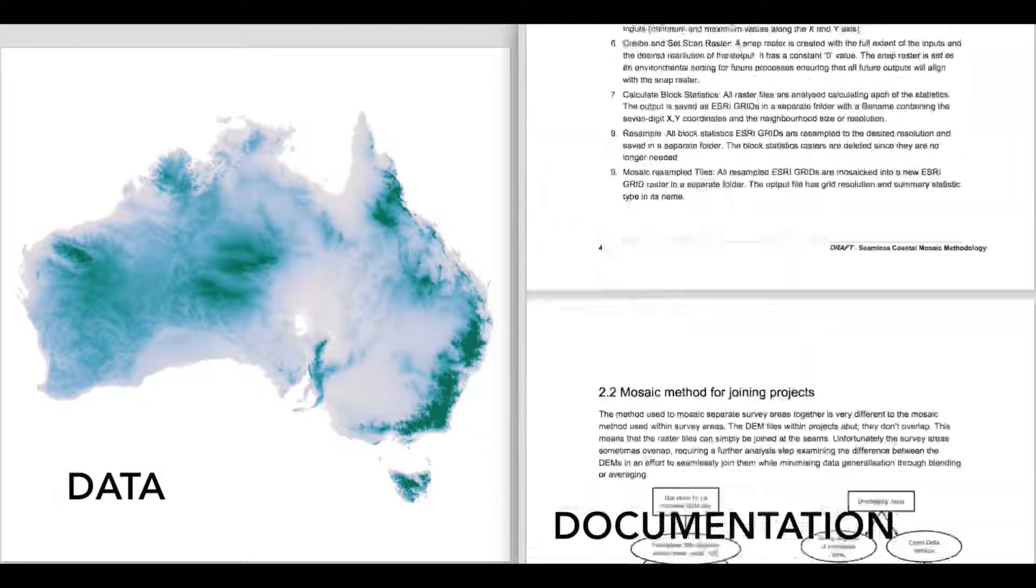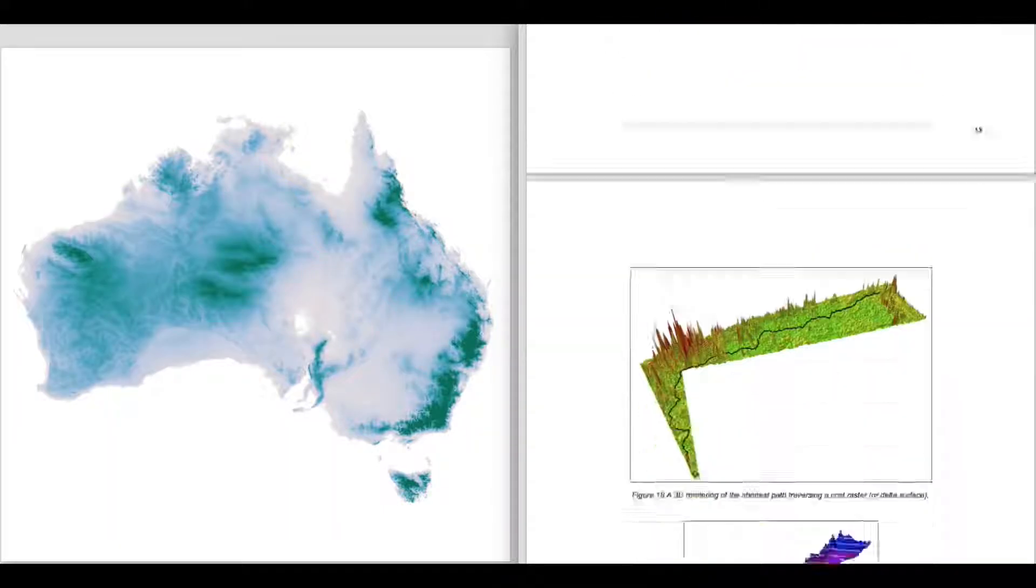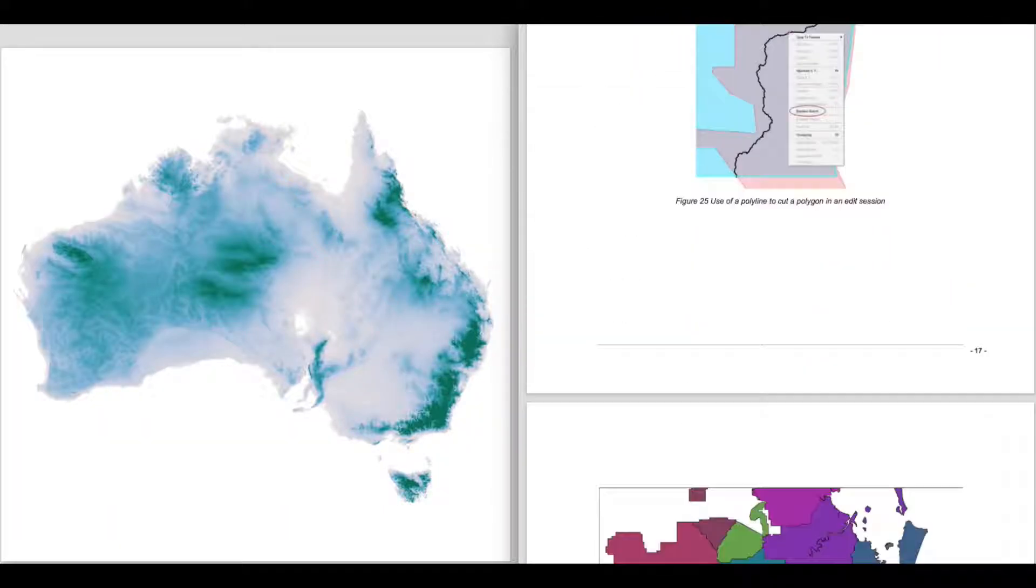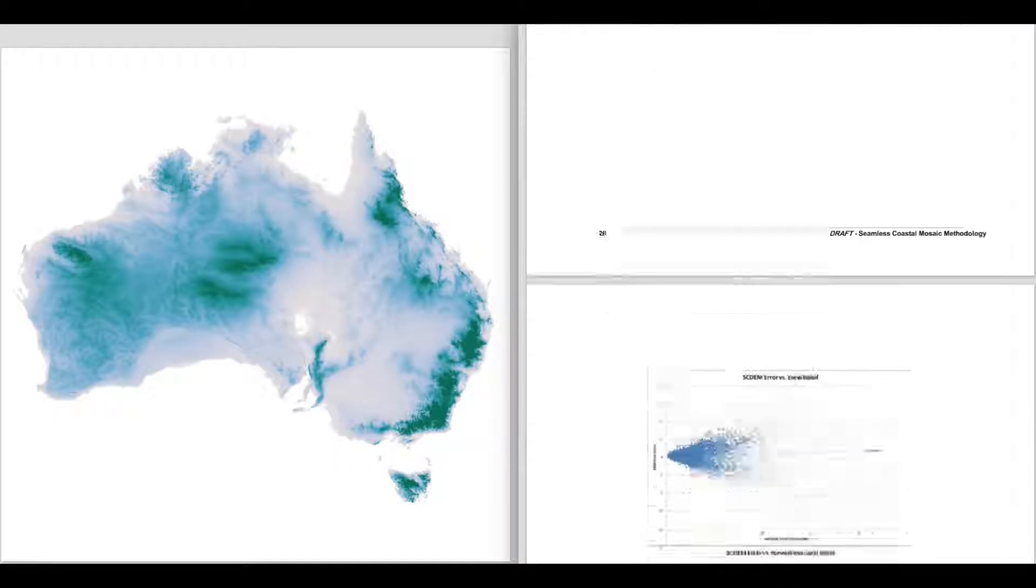Geoscience Australia's process is extremely well documented, but this documentation is static and exists separate from the data and the tools used. This lack of connection between documentation, source data and tools means that every time the process is rerun, it may need to be reinterpreted from the documentation.